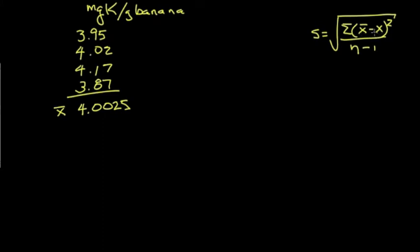So let's calculate in a new column the difference between the average value and each entry from the first column. So 4.0 minus 3.95, and I'll just give you those numbers, 0.0525.